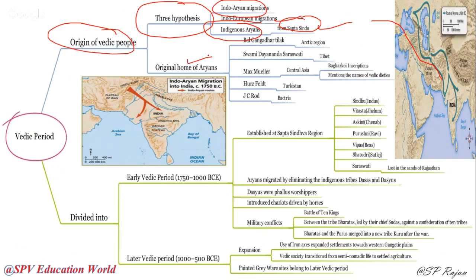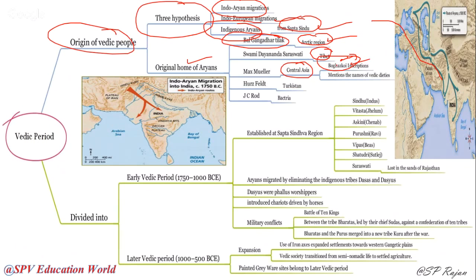Regarding the original home of Aryans, many scholars have their own views. Bal Gangadhar Tilak said Aryans are from the Arctic region. Swami Dayananda Saraswati said they are from Tibet. Max Muller said Central Asia is their main home, evidenced by the Bogaskoi inscription. The names of Vedic deities in Central Asia and India are similar, based on the worship they followed.